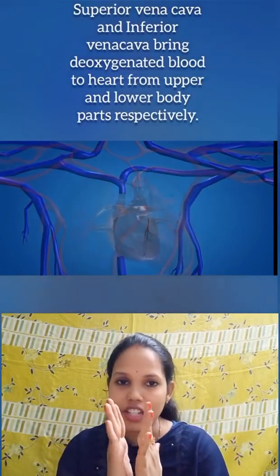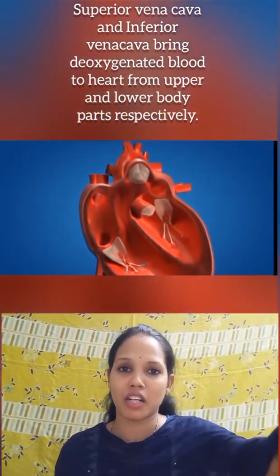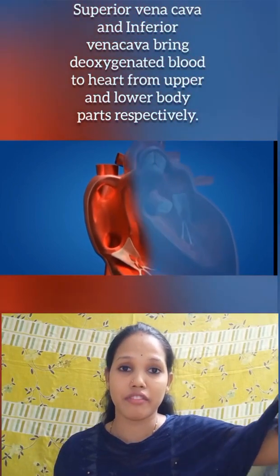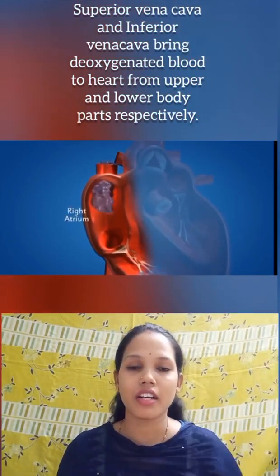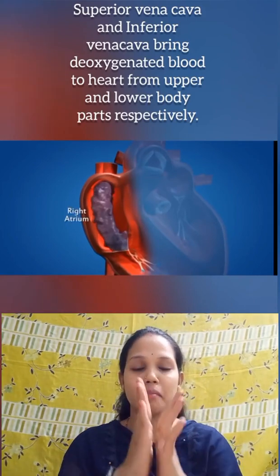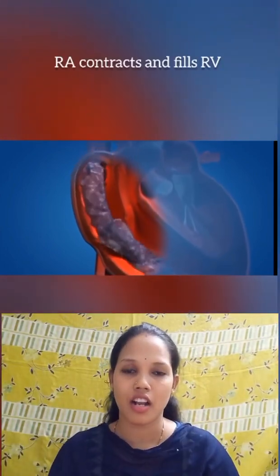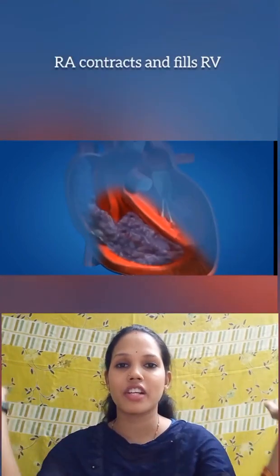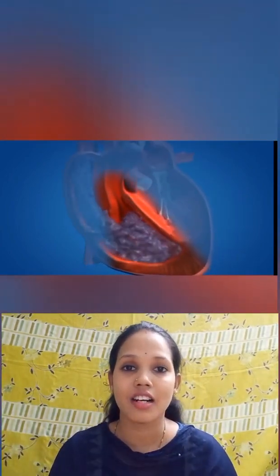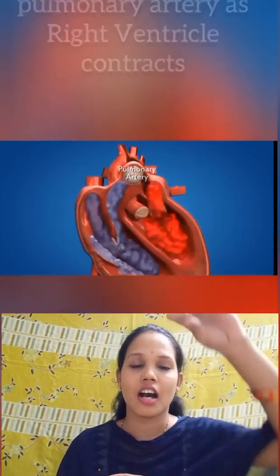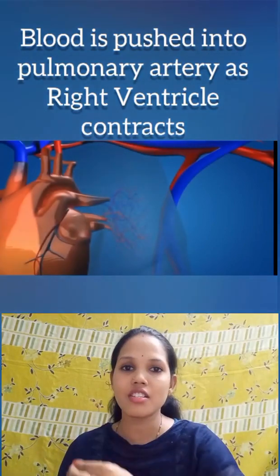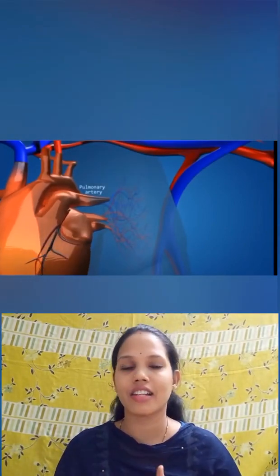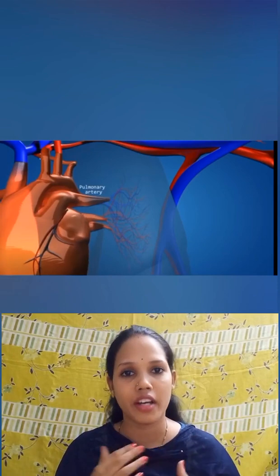Upon contraction of the right ventricle, by the opening of the pulmonary valve, blood enters into the pulmonary artery. The pulmonary artery is divided into a Y-shape and supplies blood to both the right and left lungs. Once the blood reaches the lungs, it gets enriched with oxygen where the exchange of gases happens. This oxygenated blood then returns to the left auricle again, and the circulation continues again and again.